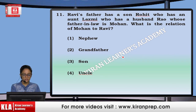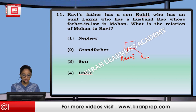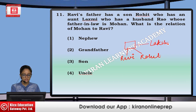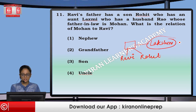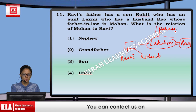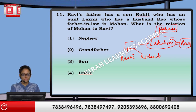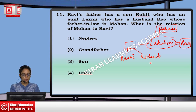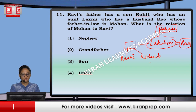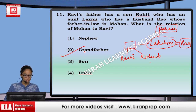Next question: Ravi's father has a son Rohit, who has an aunt Lakshmi — that means father's sister. Lakshmi has a husband Rao, whose father-in-law, that means Lakshmi's father, is Mohan. What is the relation between Mohan and Ravi? Lakshmi's brother — for that Mohan will be the father. Son's son will be grandson, so Mohan will be grandfather, and Rohit will be grandson. That means option number two.